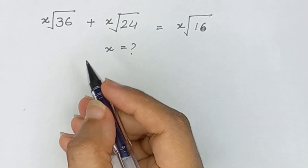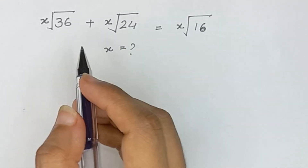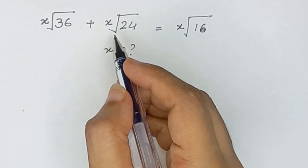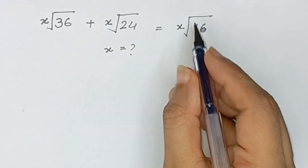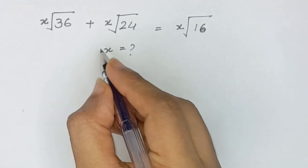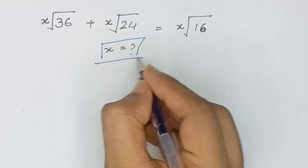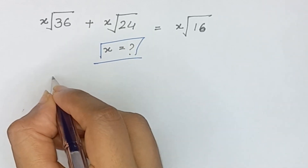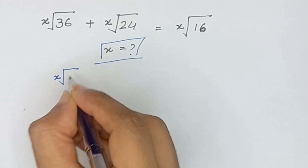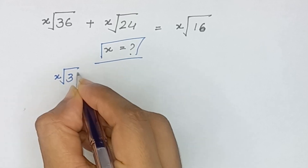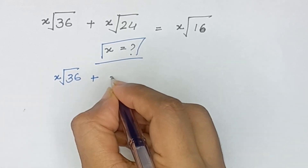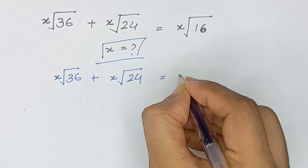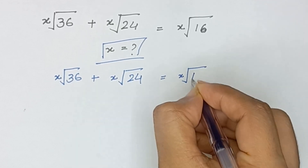Hello friends, welcome back to my channel. In this video we will solve a nice radical equation which is x-root of 36 plus x-root of 24 is equal to x-root of 16, and we will solve this equation for x. It is given that x-root of 36 plus x-root of 24 is equal to x-root of 16.